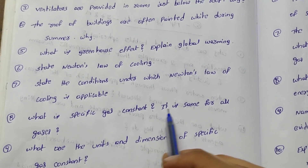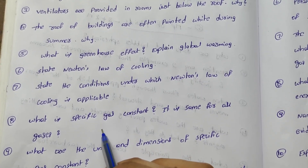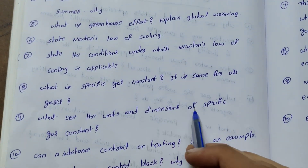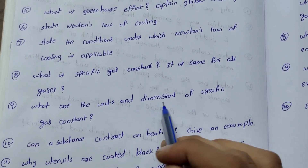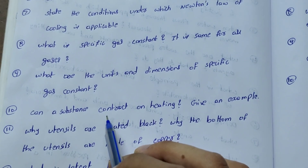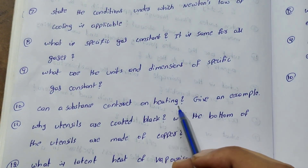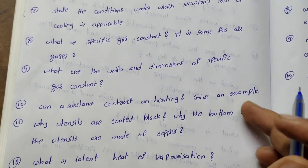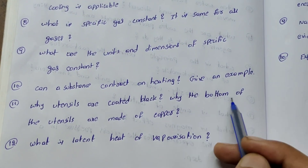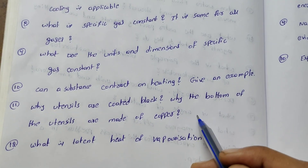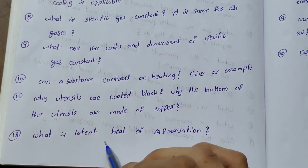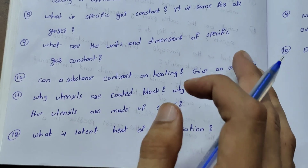Specific gas constant — is it the same for all gases? What are the units and dimensions of the specific gas constant? Can a substance contract on heating? Give an example. Why are utensils coated black? Why is the bottom of utensils made up of copper? What is the latent heat of vaporization?